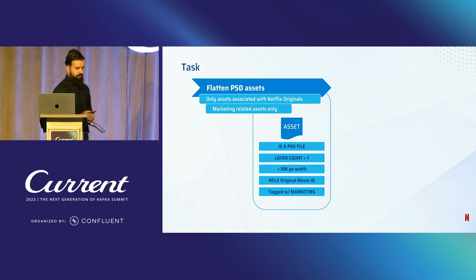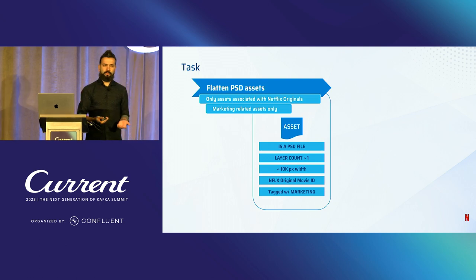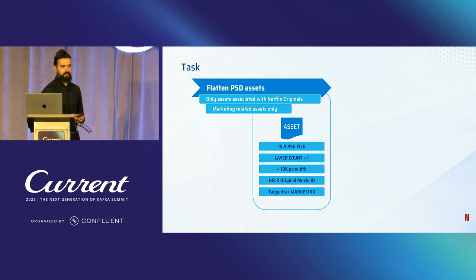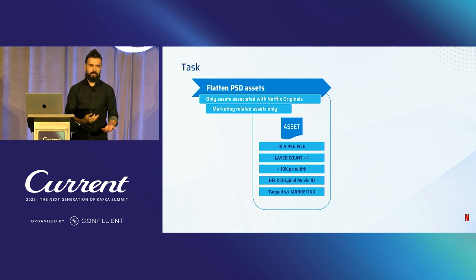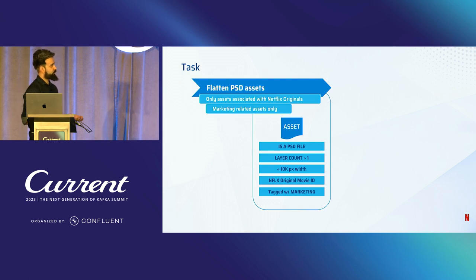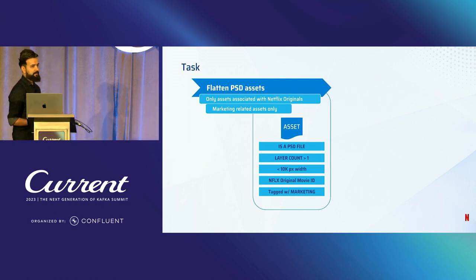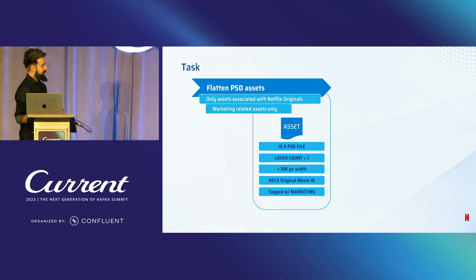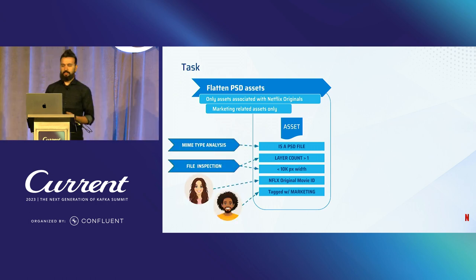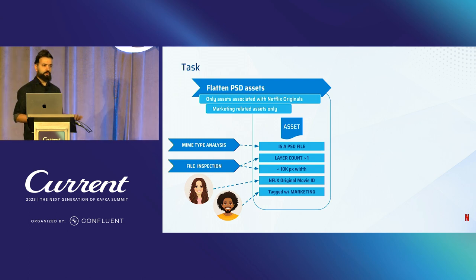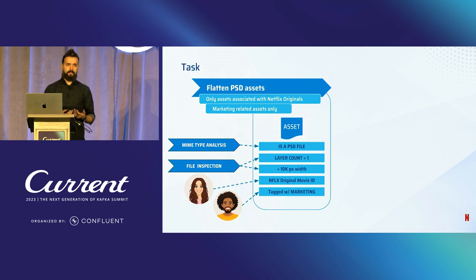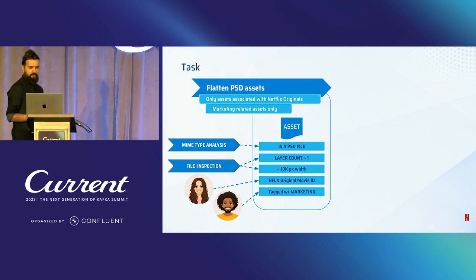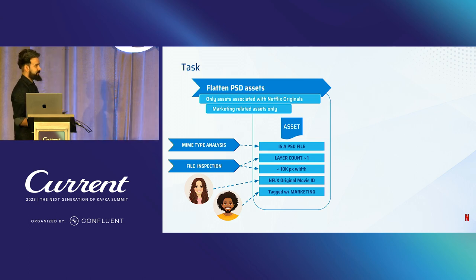As an example, let's say we want to flatten PSD assets. A PSD asset is a Photoshop document which usually consists of multiple layers. We want to create a single layer by flattening all layers. But to save on compute resources, we don't want to do this for all PSD files — only for assets smaller in size, associated with a Netflix show, and tagged by the marketing team. All this metadata arrives at different times, and the order of these changes is not deterministic. But once all conditions are met, we flatten the PSD file into a single layer.